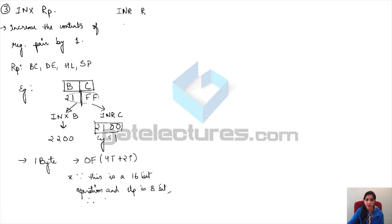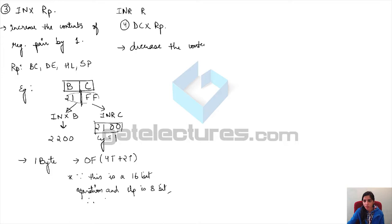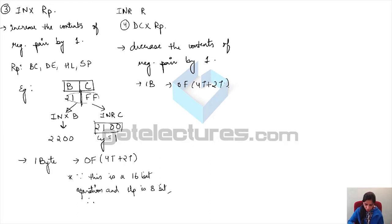Similar to INX RP, we have DCX RP. Like INX RP increases the contents of the register pair by one, DCX RP decreases the contents of the register pair by one. Everything else is the same — this is also a one-byte long instruction having one machine cycle of 6 T-states.